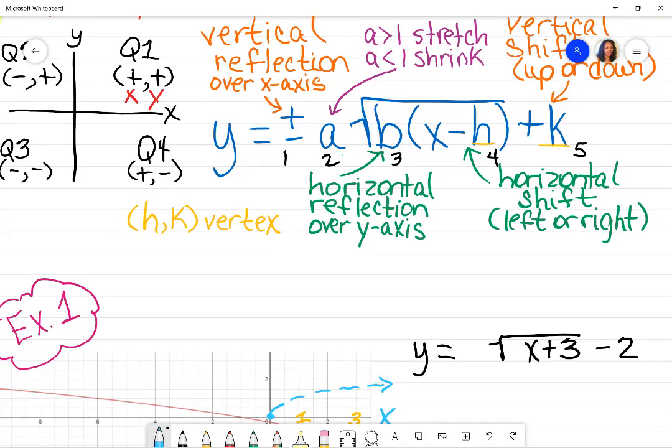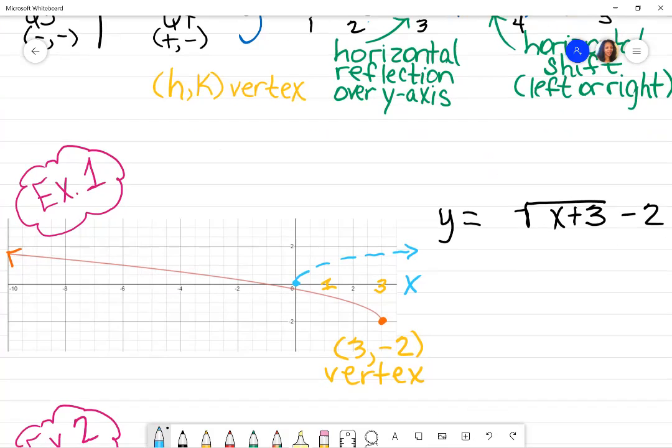I'm going to skip the stretch or shrink since this is just one. Did it do a horizontal reflection over the Y axis? This is my Y axis. Did my graph go towards the left now? Yes, it did. So that means I'm going to have a negative sign in front of my X value.